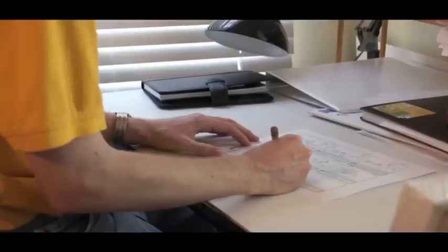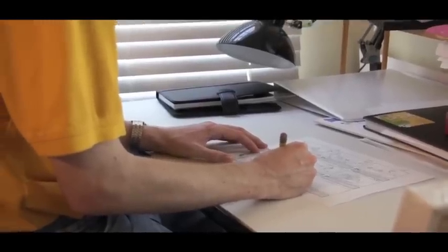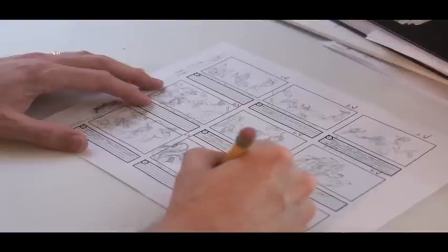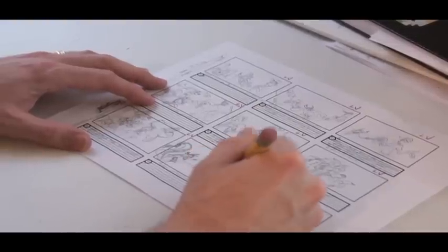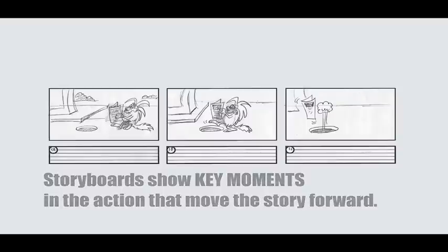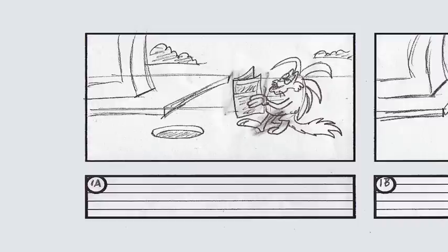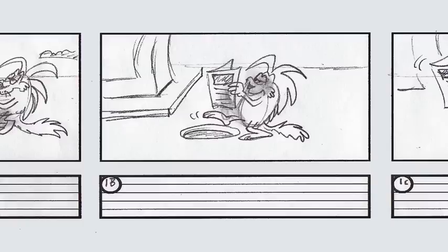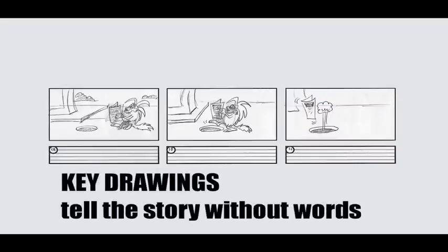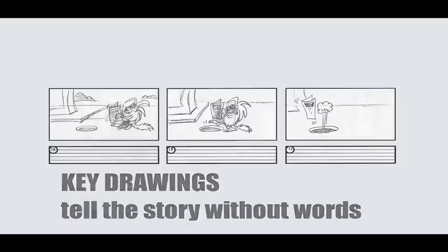When I start a cartoon, the first thing I do is storyboard it. Sometimes I'm handed a script with dialogue, but the best cartoons start out just like comic strips — panels from the Sunday funnies or comic books. These storyboard drawings show key moments in the action that move the story forward. For instance: Thurman walks along, Thurman doesn't see the open manhole, Thurman falls in. Those are what we call key drawings. They're simple, and even with no color, if you draw them right, you can follow what's going on without any verbal explanation.